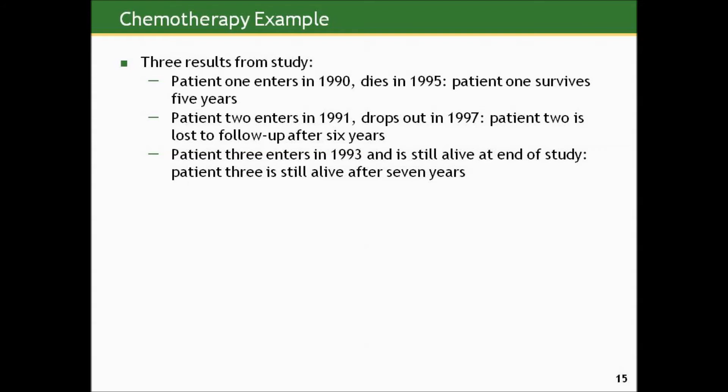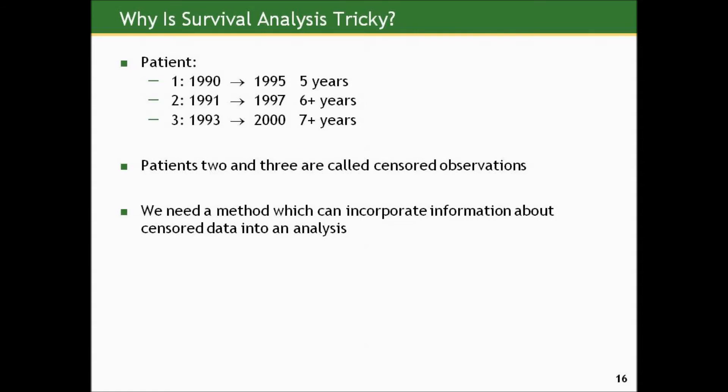Patient 3 enters in 1993 and is still alive at the end of the study — still alive after seven years. We stopped the study; she did not have the outcome of interest. We know her death time from cancer, if she is to die, will have to be greater than seven years after finishing treatment. Patients 2 and 3 — the ones with partial information — are called censored observations. Partial pieces of information are called censored; we lost track of the person before they could have the event of interest. We have a lower bound on their possible event time but not a fully observed timed event. This is why survival analysis is tricky: some subjects give full information, others give partial, and we need a method that incorporates information about censored data.